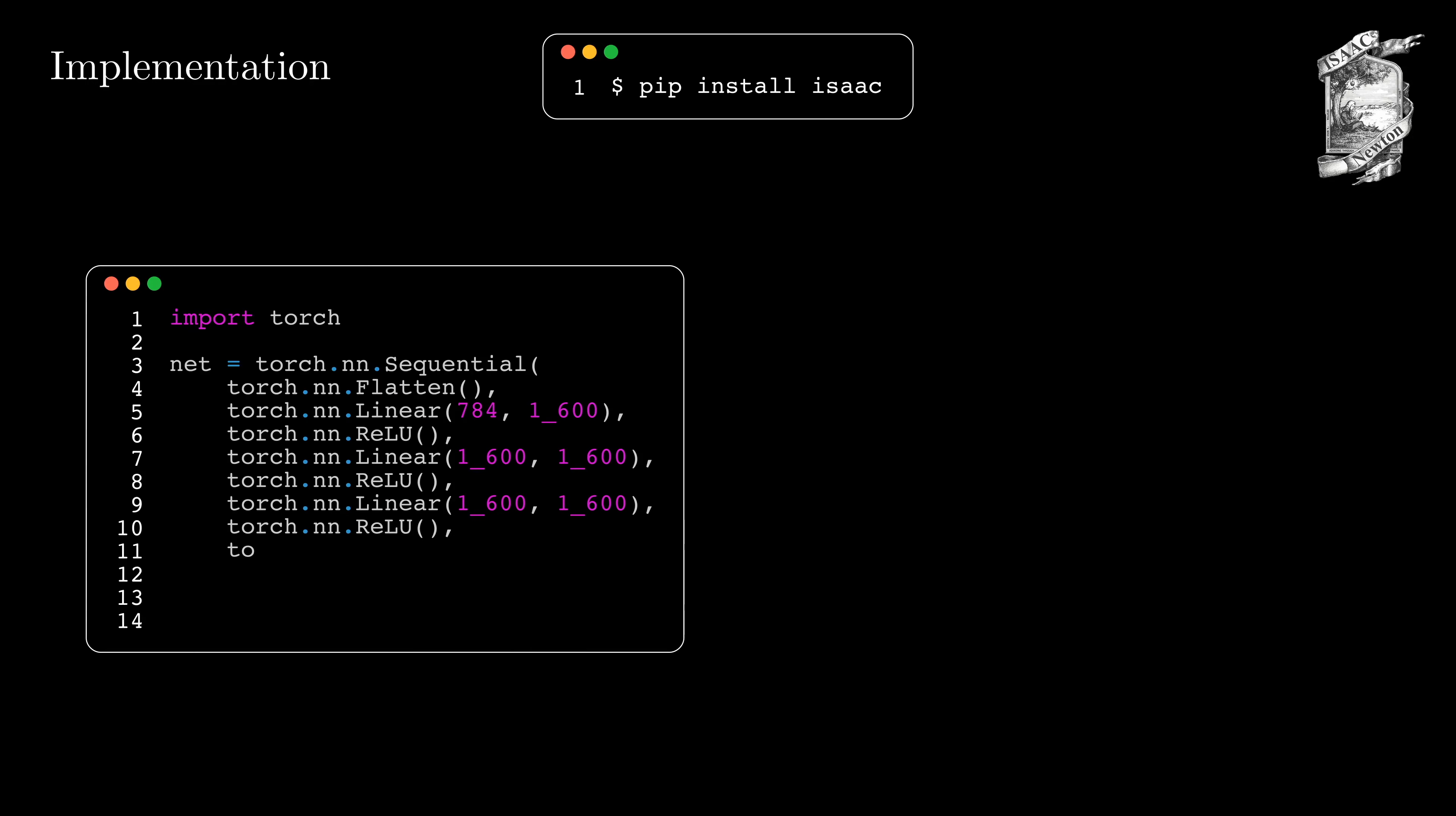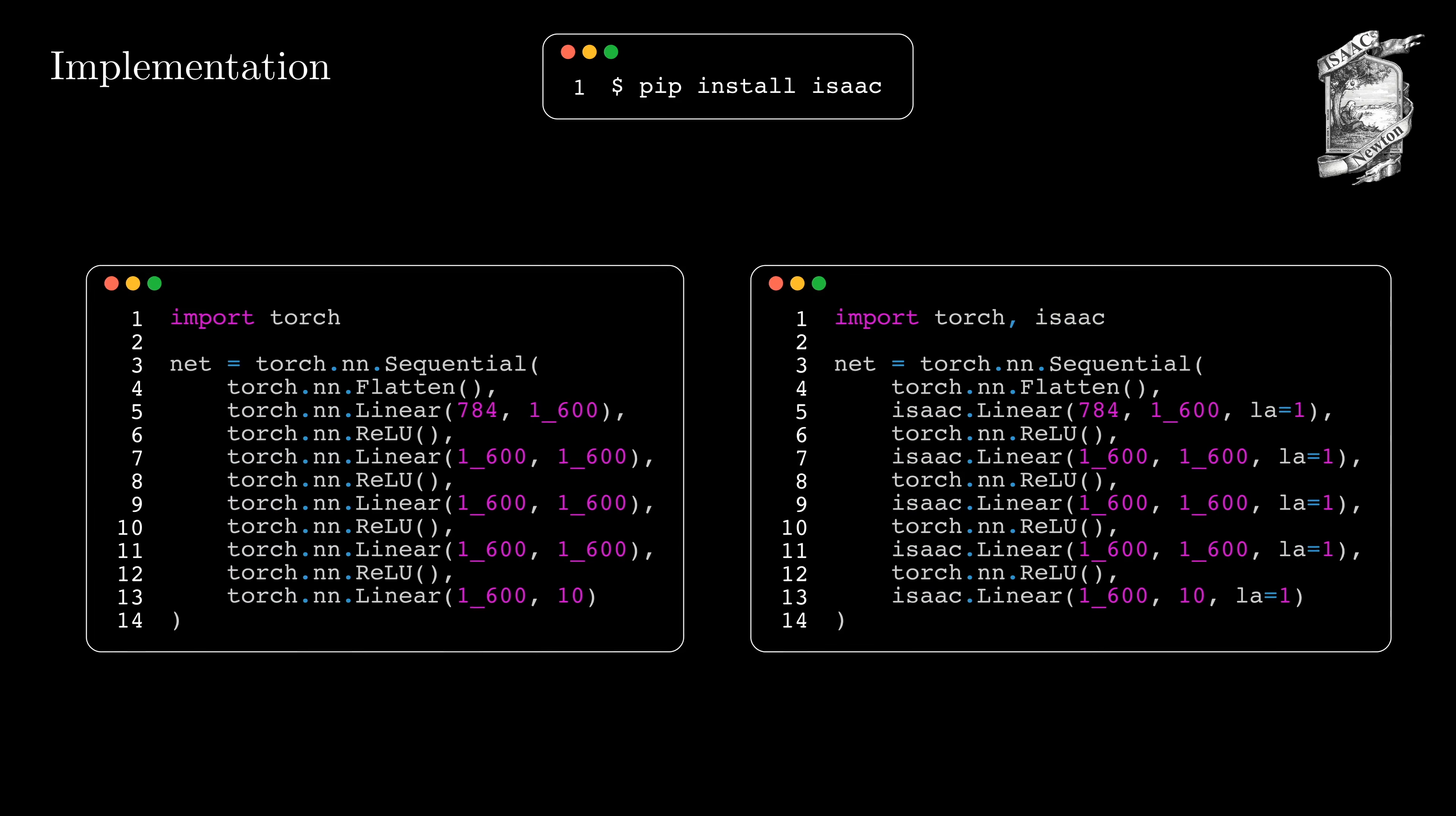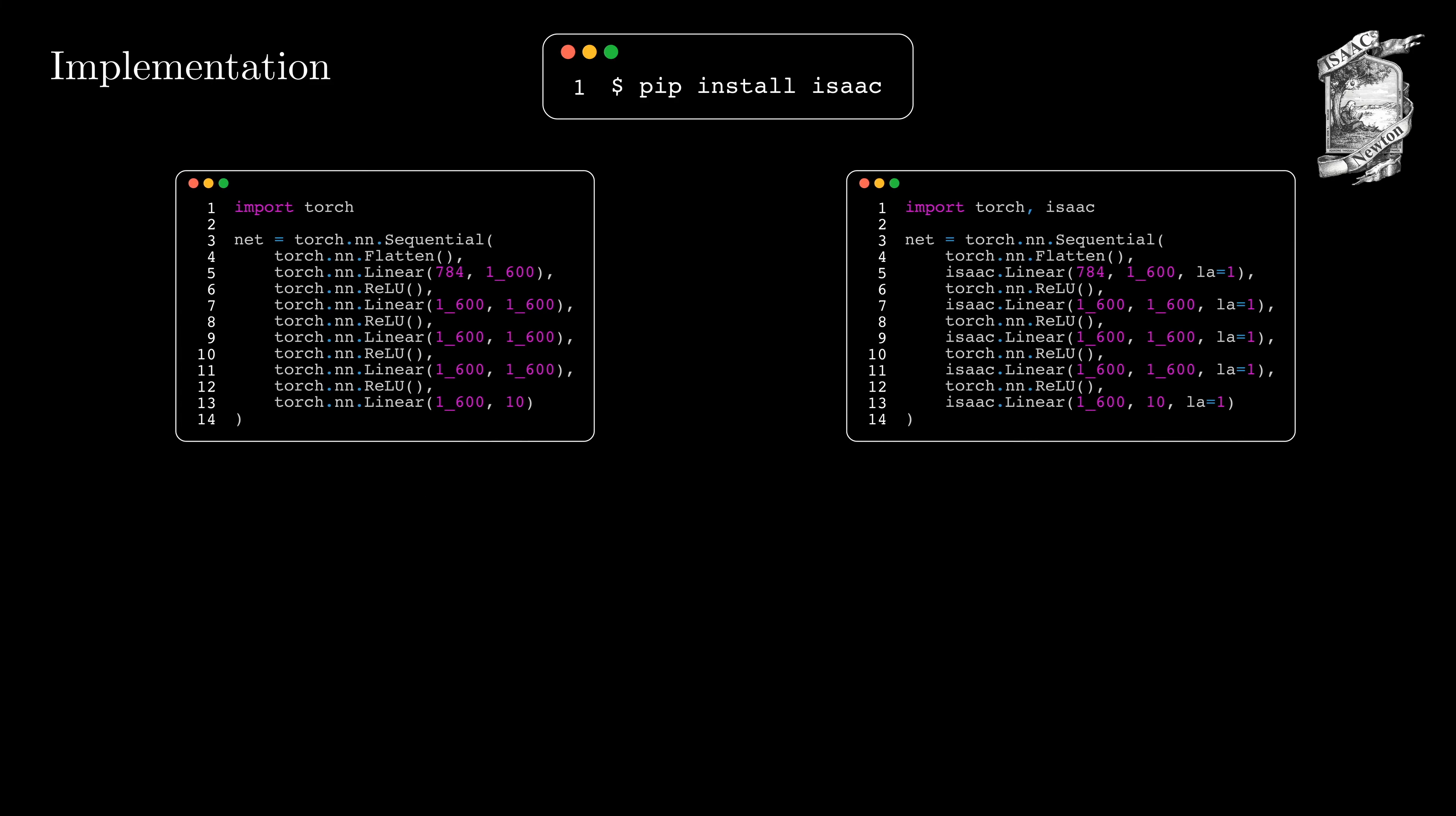Finally, let's look at how to use ISAAC. You can install ISAAC with pip install isaac directly from PyPI. To use it, take your PyTorch model, for example this five-layer neural network, and simply replace the torch.nn.Linear layers with ISAAC linear layers and add the lambda a hyperparameter. So these are the only things you need to change when switching from gradient descent to ISAAC. You can simply use SGD with or without momentum for training and during backpropagation, as all necessary information is already available, the gradient is simply replaced by the ISAAC update zeta star.